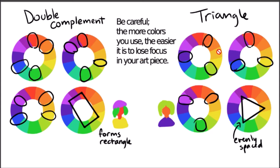A triangle color scheme is evenly spaced on the color wheel and often has a nice contrast to it — so we'd have red, blue, and yellow, or purple, orange, and green.